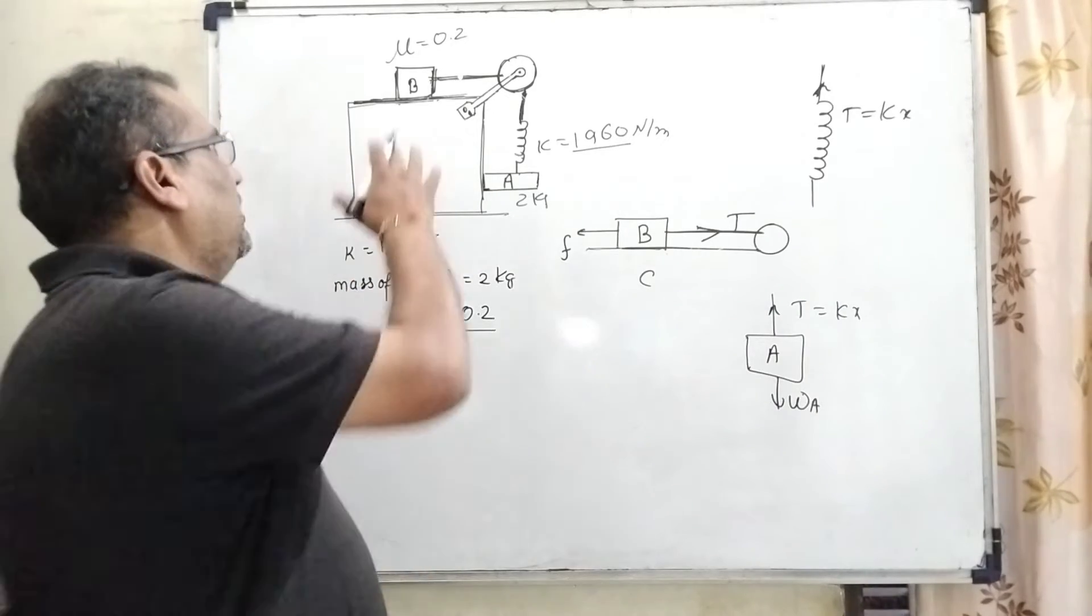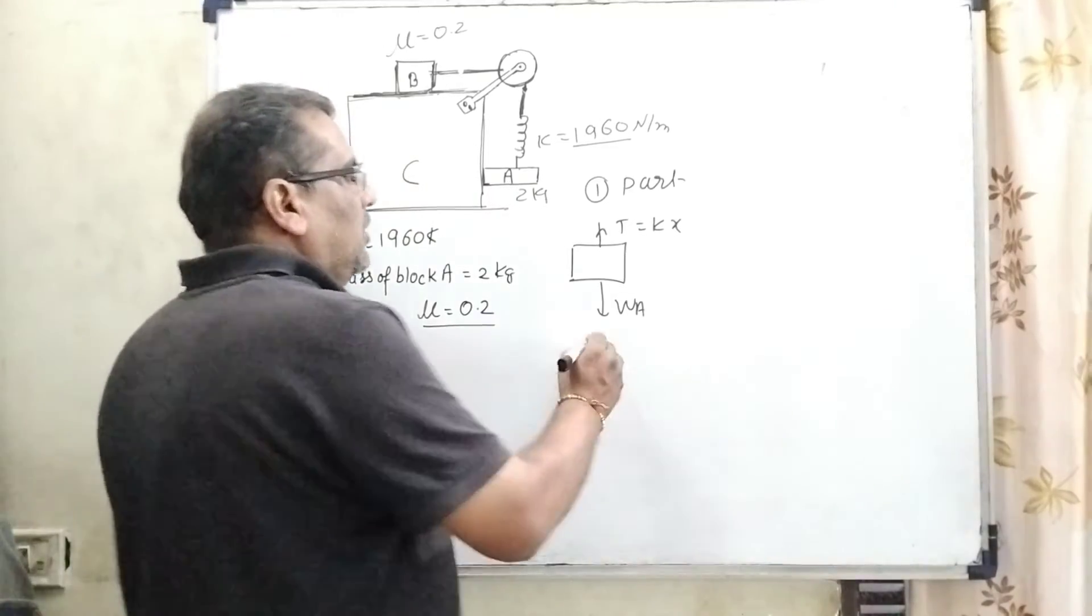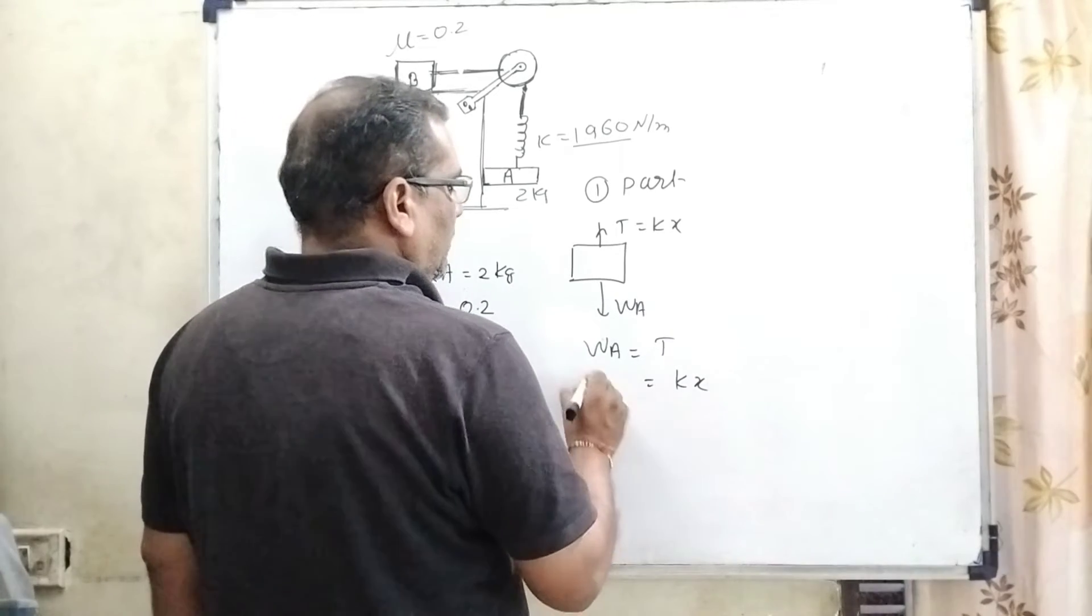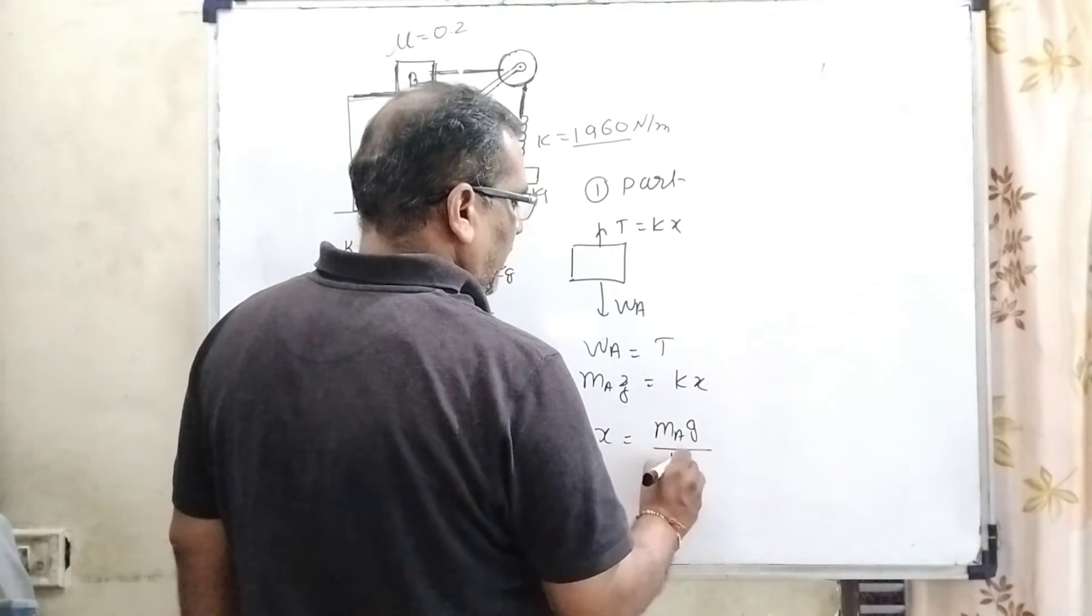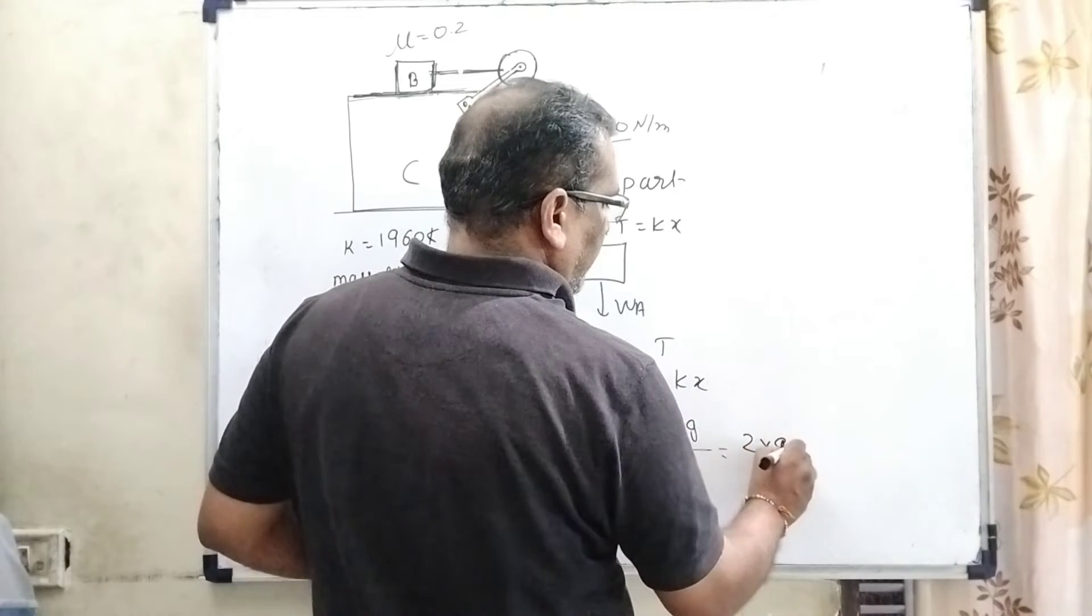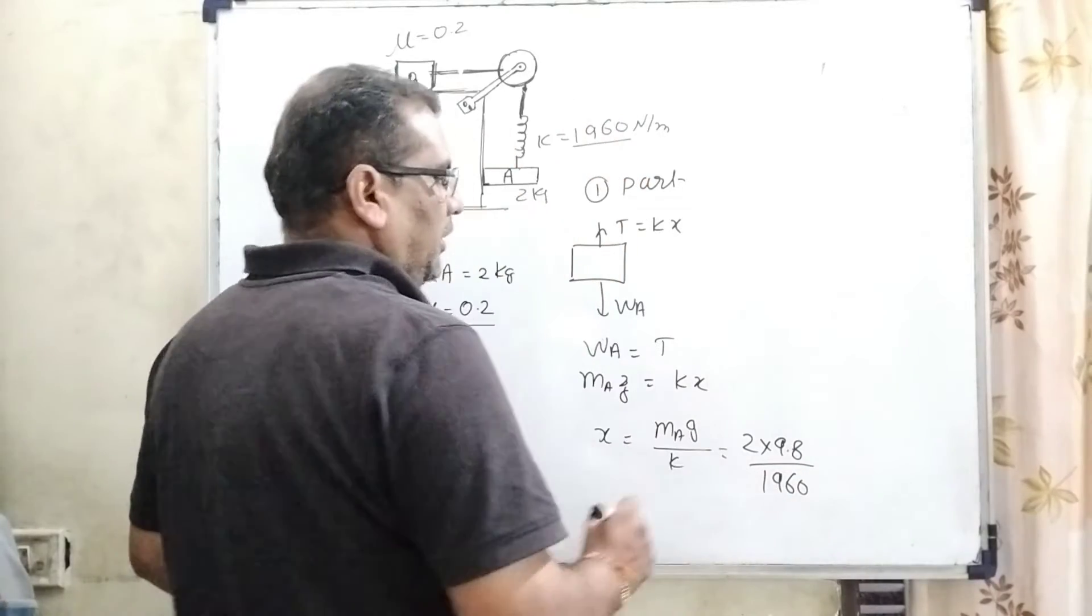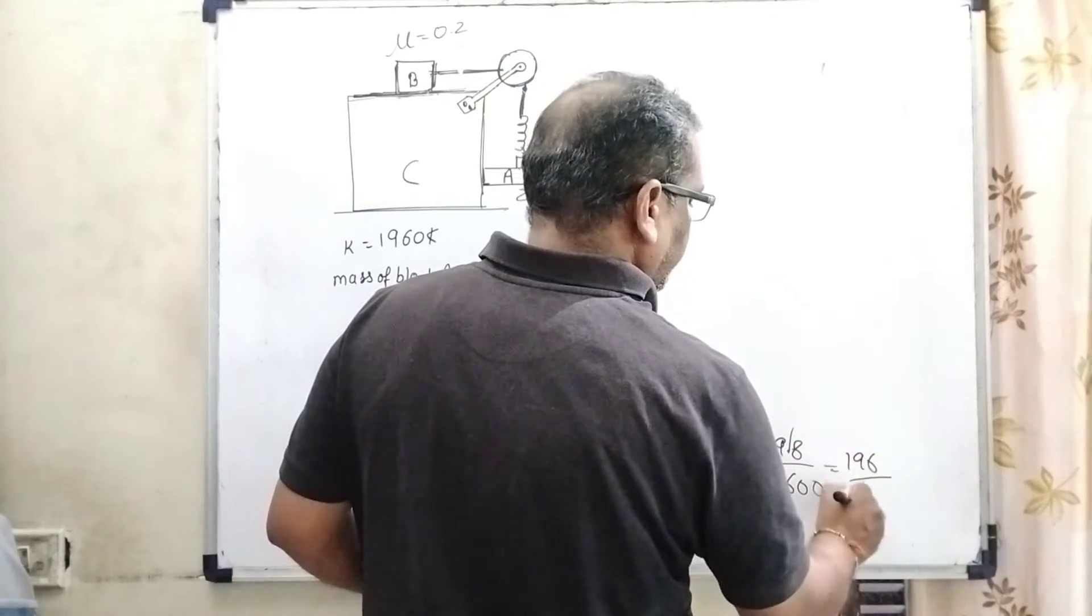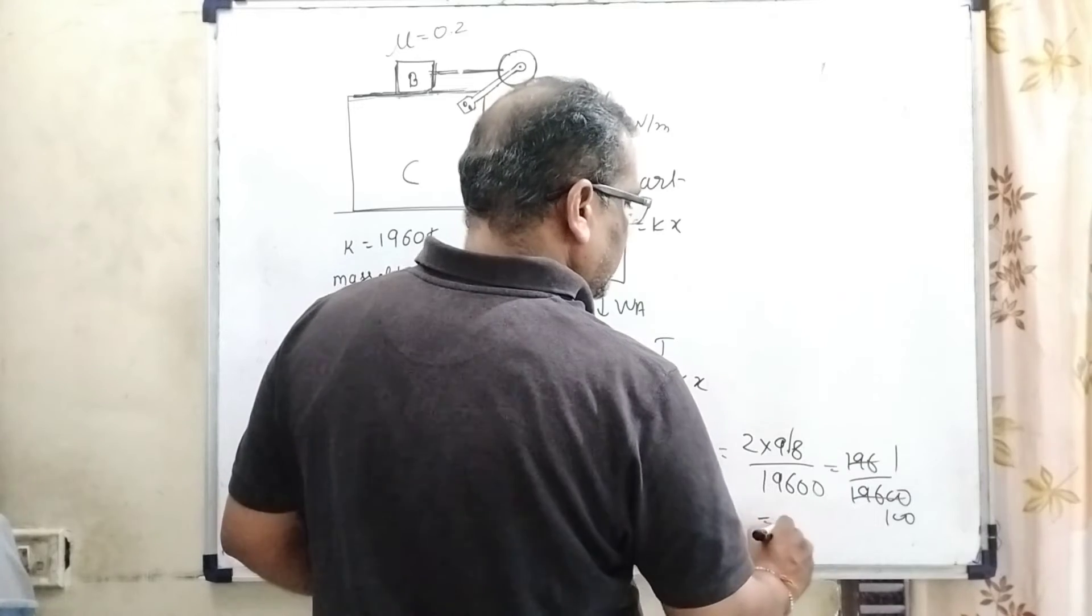Now, WA equal to tension force. This tension force equals K times x, and WA equals mA times g. So x equals mA times g divided by K. What is the value of mass of block A? That is 2 kilogram, g is 9.8, and K is 1960. So x equals 1 upon 100, that is 0.01 meter.